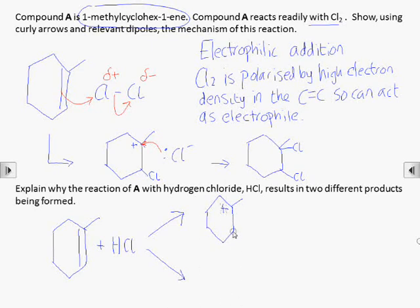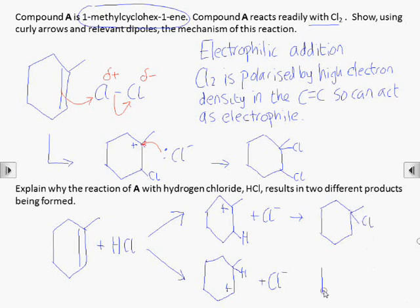The hydrogen could get added to either of the two carbons of the alkene, with the chlorine subsequently bonding to the other one. So we have two possible isomeric products, so long as the alkene is unsymmetrical, which is the case with 1-methyl-cyclohexane.